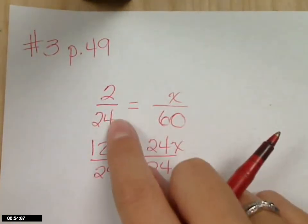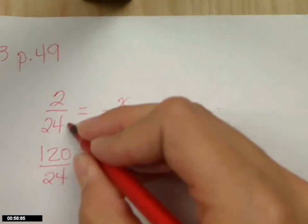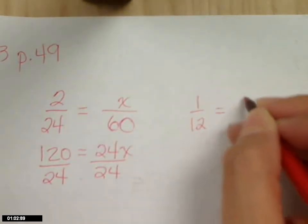Can you simplify this first? Yes, absolutely. And I think I'm going to do that. Two over twenty-four simplifies to what? One twelve. One twelve. And that will make my job a little bit easier.